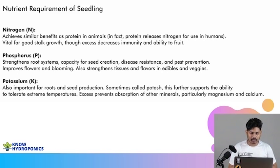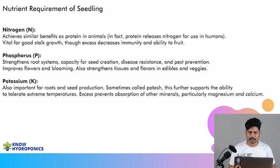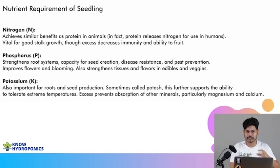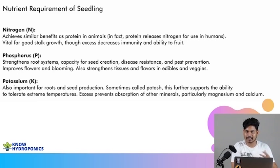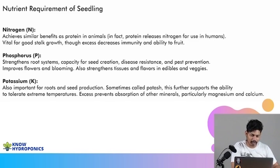Now let's talk about phosphorus. Phosphorus actually strengthens the root system. When we are doing crops like potato, radishes, or any crops which need a very strong root system, phosphorus is the key element for that.